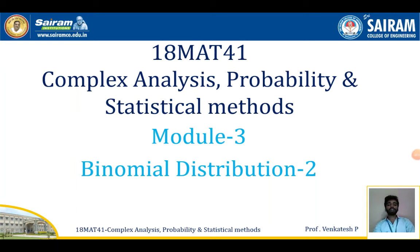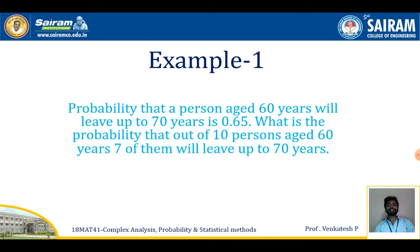Welcome to one more lecture on binomial distribution. This is a continuation of the previous lecture, so here I am going to discuss a few more examples on binomial distribution. First example: the probability that a person aged 60 years will live up to 70 years is 0.65. What is the probability that out of 10 persons aged 60 years, seven of them will live up to 70 years?